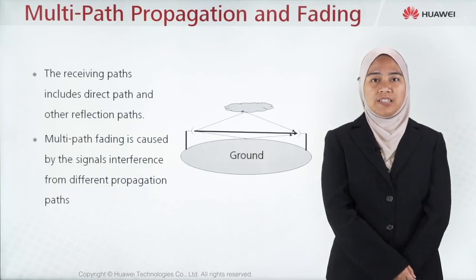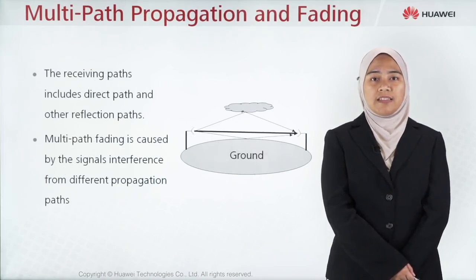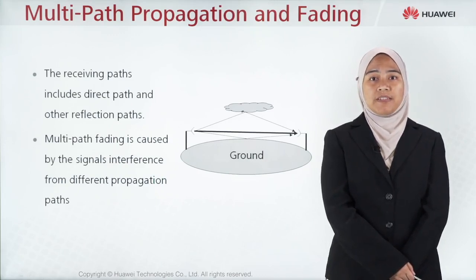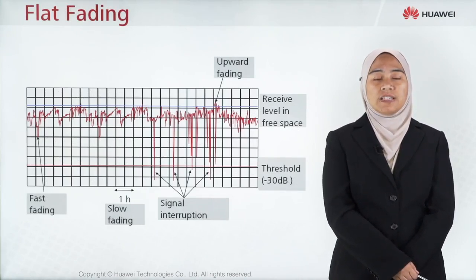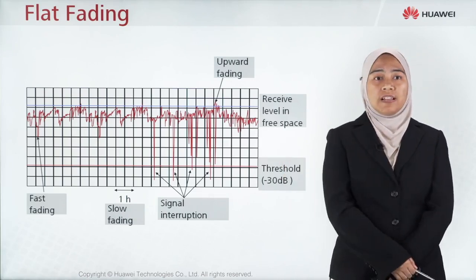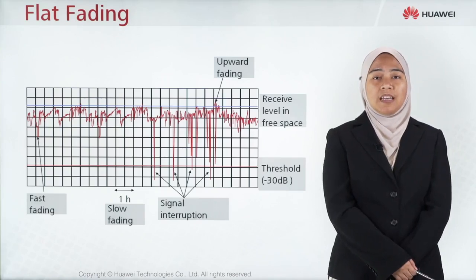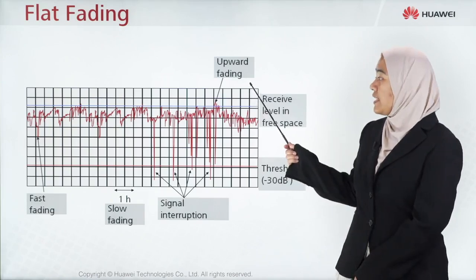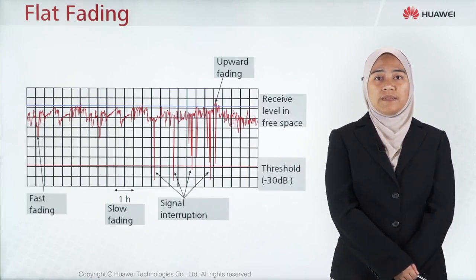Next is multipath propagation and fading. The receiving paths include direct paths and other reflection paths. Multipath fading is caused by signal interference from different propagation paths. Fading can be classified based on the field strength of the receiving point — for example, when the receive level is higher than the free space level by a few dB, this is called upward fading.